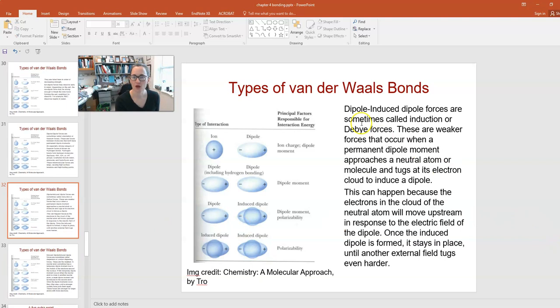The next class is dipole-induced dipole forces, also known as induction or Debye forces. These are weaker forces that occur when you have a permanent dipole moment approaching an initially neutral atom or molecule with a symmetric charge distribution. As your permanent dipole gets closer to the neutral atom, you can envision the neutral atom as having an electron cloud around it. When something with a permanent dipole moment approaches this electron cloud, it tugs on that charge distribution, causing it to become asymmetric and inducing a dipole moment in something that originally might not have had one. Once you've induced a dipole in the originally symmetric molecule, it stays there until something stronger tugs it away.